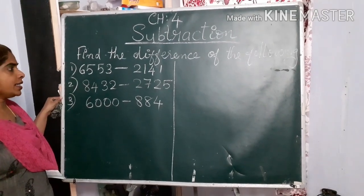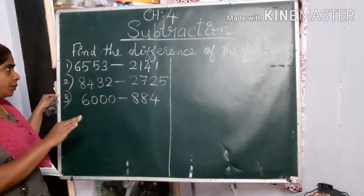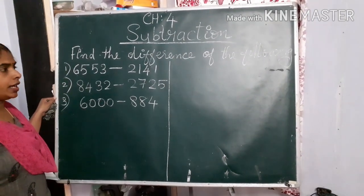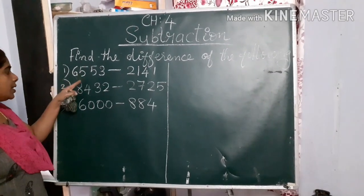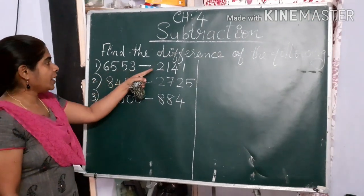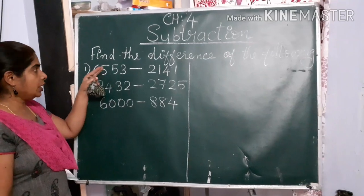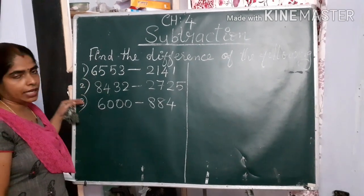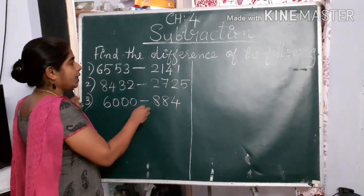When you arrange the numbers for subtraction, you will write the bigger number first, then only the smaller number. Then only you will get the answer. Here you can see three questions. We have to find the difference of these numbers. We will write these numbers in column wise and we will subtract.